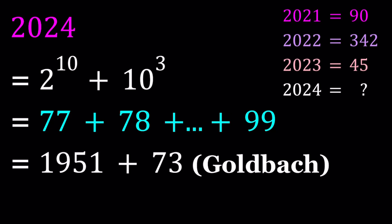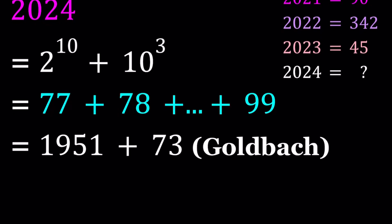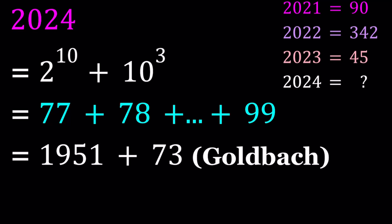And by Goldbach's conjecture, you hopefully know that any even integer greater than 4 can be written as a sum of 2 primes. It's not necessarily distinct. For example, if you think about it, 6 can be written as 3 plus 3, and you can just find the other ones. 10 can be written as 3 plus 7. 2024 can be written as 1951 plus 73 by Goldbach's conjecture, but that's not the only way to do it. Obviously, there's more than one way to achieve this.